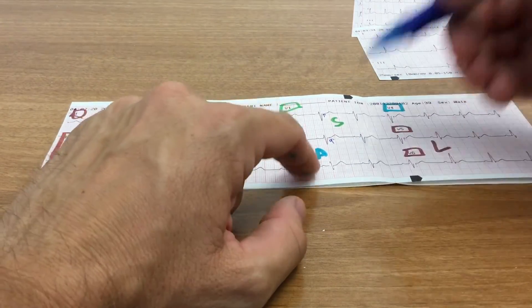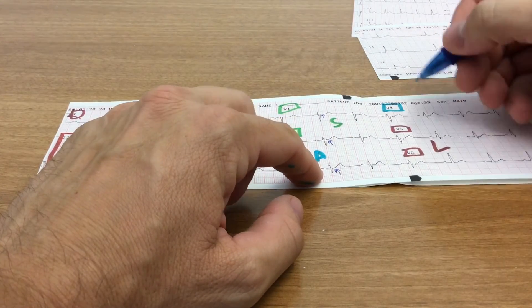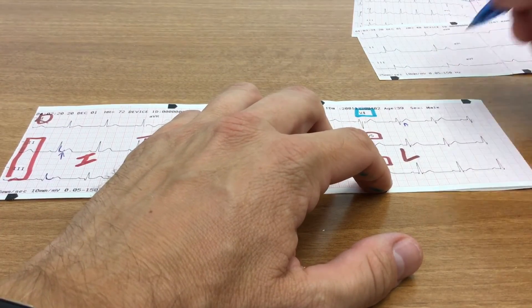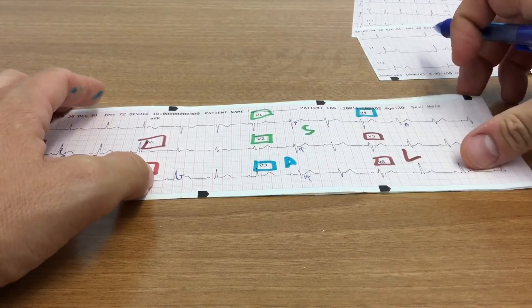Move over to anterior. I have a return to baseline there at the J point. Okay, and V3, V4. I also have a return to baseline there as well. So my septal and anterior walls check out.